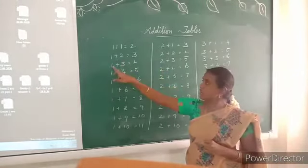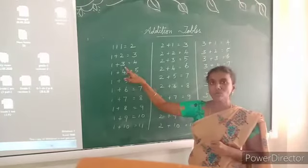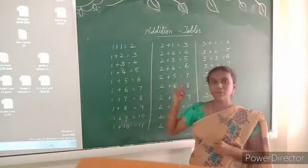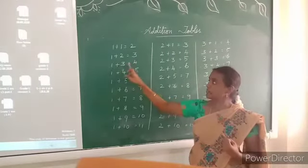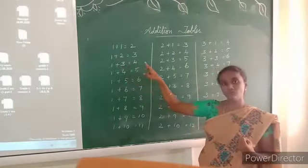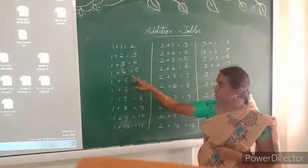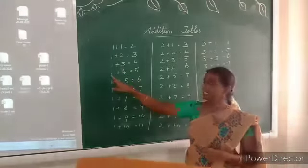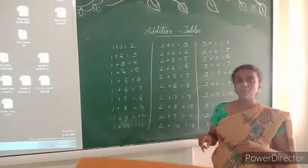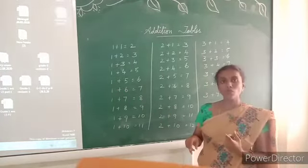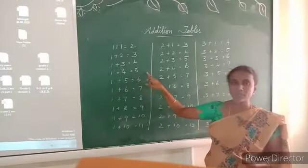Look at the next one: 1 plus 3. If you compare these 2 numbers, 3 is the greater number. So keep the greater number in your mind: 3 in the mind, 1 in the finger — 3 after 4. 1 plus 4: 4 is the greater number, 1 is the smaller number. Keep the greater number in the mind: 4 in the mind, 1 in the finger — 4 after 5. 1 plus 4 equals 5.